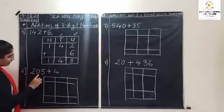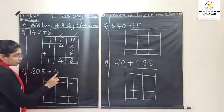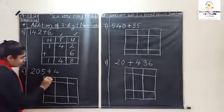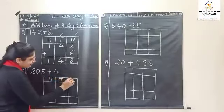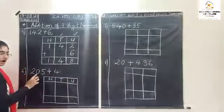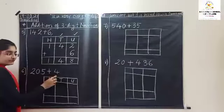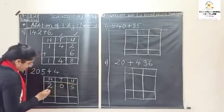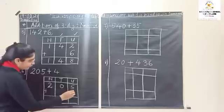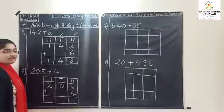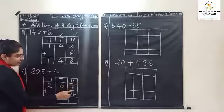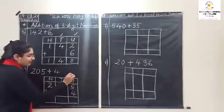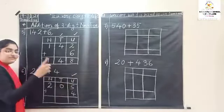Now come to the next question: two hundred and five plus four. How many digit number is this? Yes, three digits. So hundreds, tens and units. Two hundred and five plus four — four is a single digit number, means ones or units. So it will come in units place. Always start with units place.